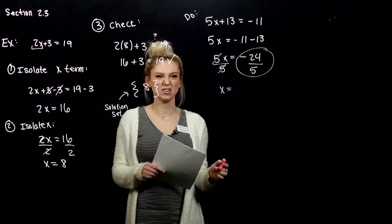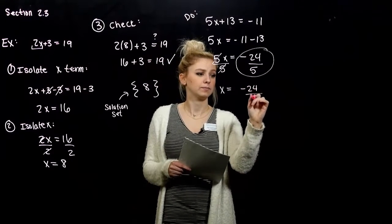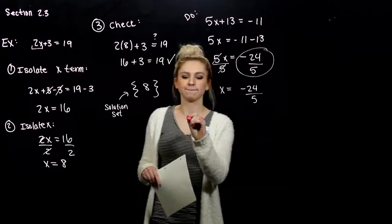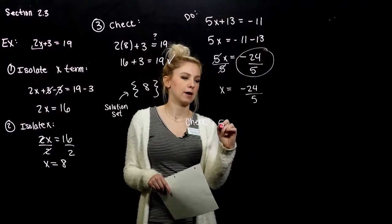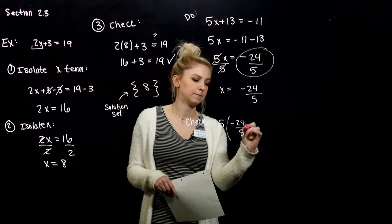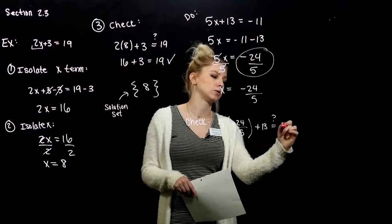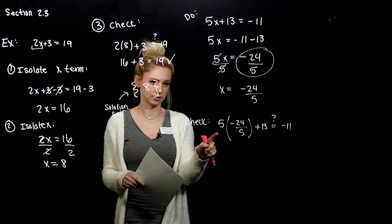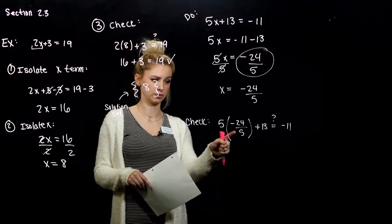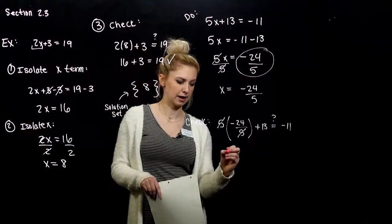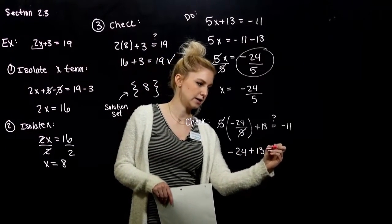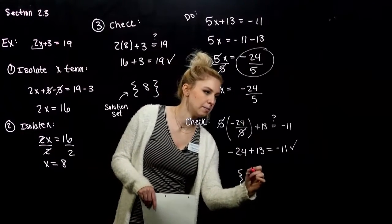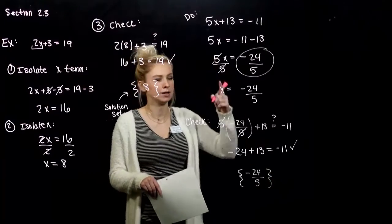What do you notice? That doesn't evaluate nicely. But we can have fractions for an answer — that's valid. We just need to plug it back in and check to make sure it actually works. When we leave it in fraction form, it generally works out nicely when we plug it back in. In this case, the 5 divided by 5 is gone, so we're looking at negative 24 plus 13 — is that equal to negative 11? It is. So our solution set contains the value negative 24 fifths; when I plug that in, it makes my equation true.